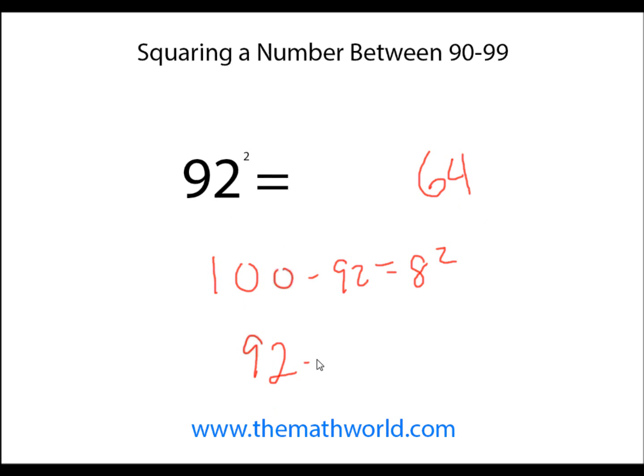Then we have 92 minus 8, and that gives us 84, so we can go ahead and write down 84, and 92 squared is 8,464.